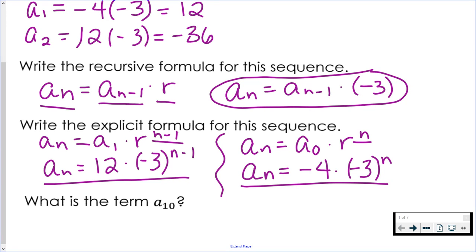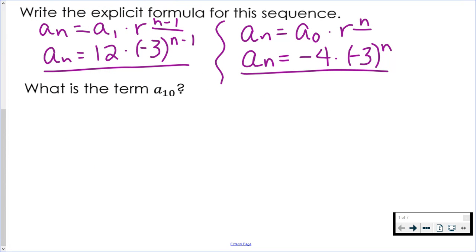The last part of the question is asking us to find the tenth term. Now, you can use either one of the explicit formulas. I'm going to show you how you can use both of them. So if I use the one on the left, using term one, n is 10. Since I want the tenth term, we have 12 times negative three to the ten minus one power. Now, I would encourage you to pause the video so that you can try to do this on your own. Just make sure you use the correct order of operations.